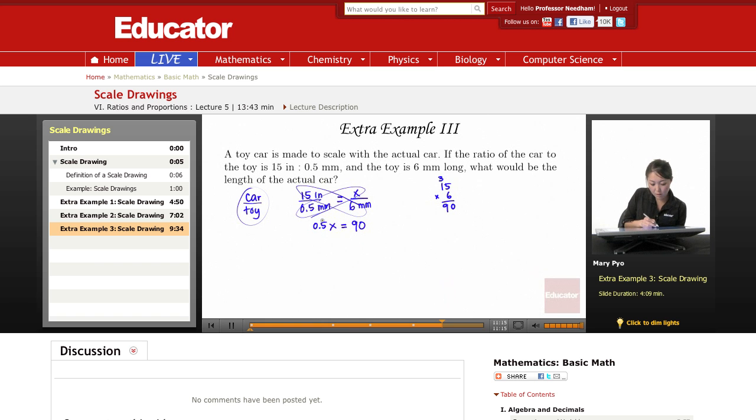Now I want to know what I have to multiply 0.5 by to give me 90, so I would have to divide by 0.5. If I make this into a fraction, this is the same thing as divide. 90 divided by 0.5.